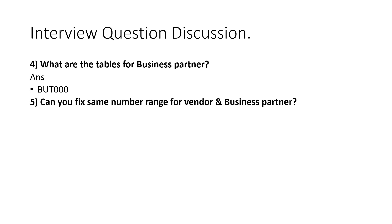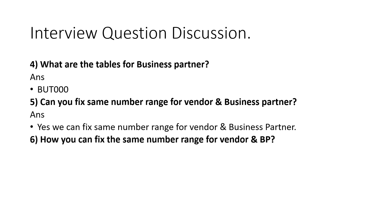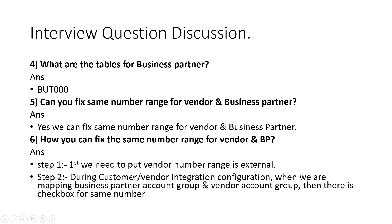Can you fix the same number range for both the vendor and the Business Partner? Yes, we can. To do this, the vendor number range must be set as external. Since in SAP S/4 HANA we first create the Business Partner and then the vendor, we select the external number range for the vendor. Then in the vendor account group, we check the 'same number' checkbox. After that, when creating the Business Partner for the vendor, the same number range can be applied to both.